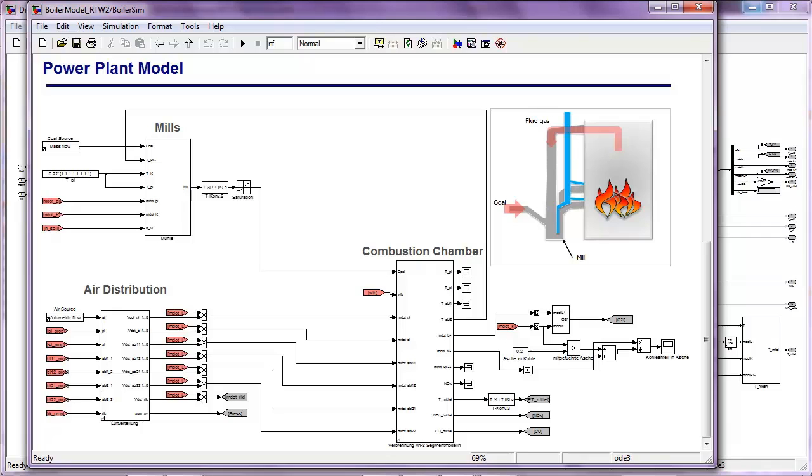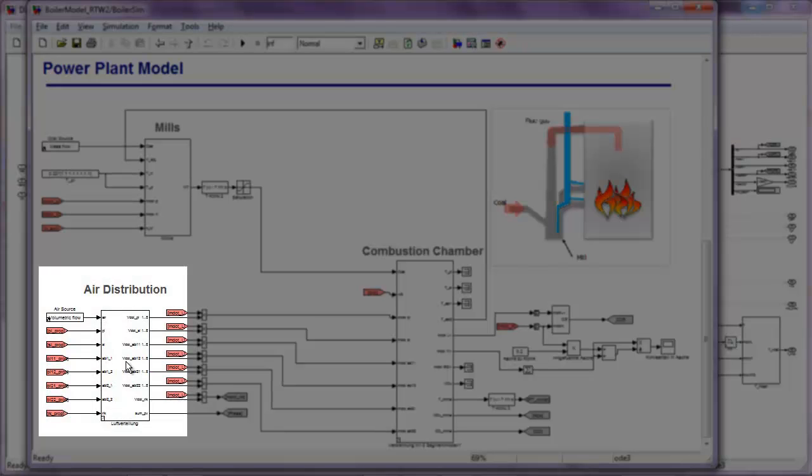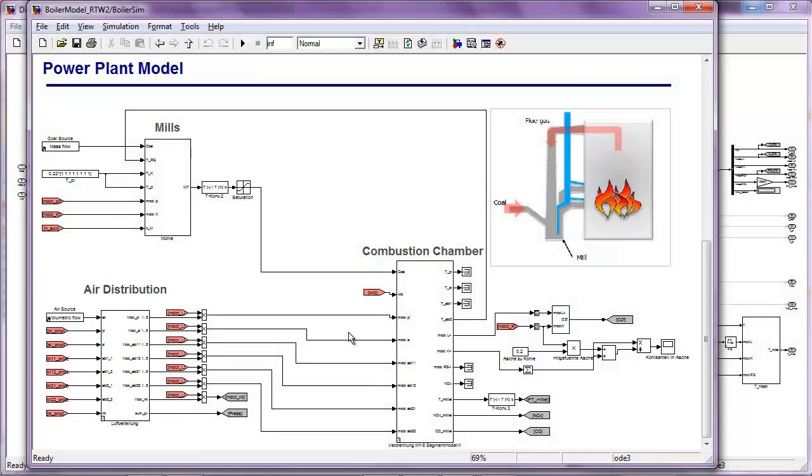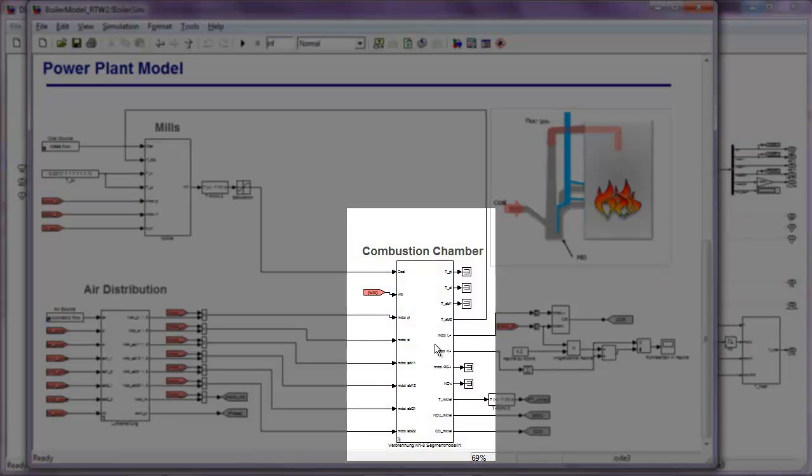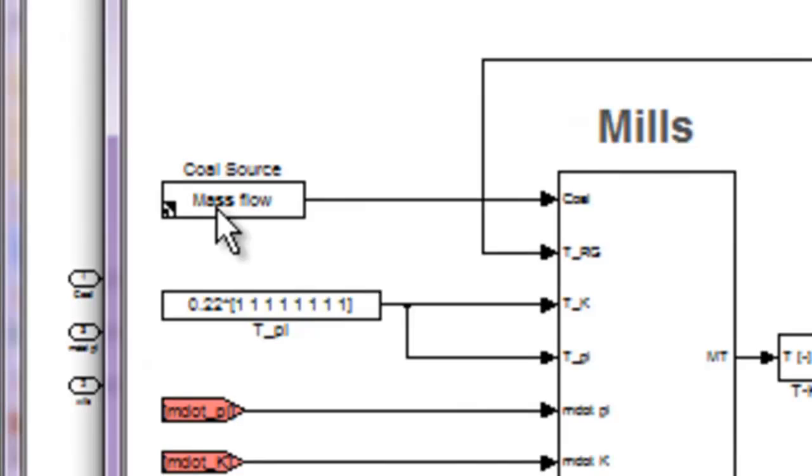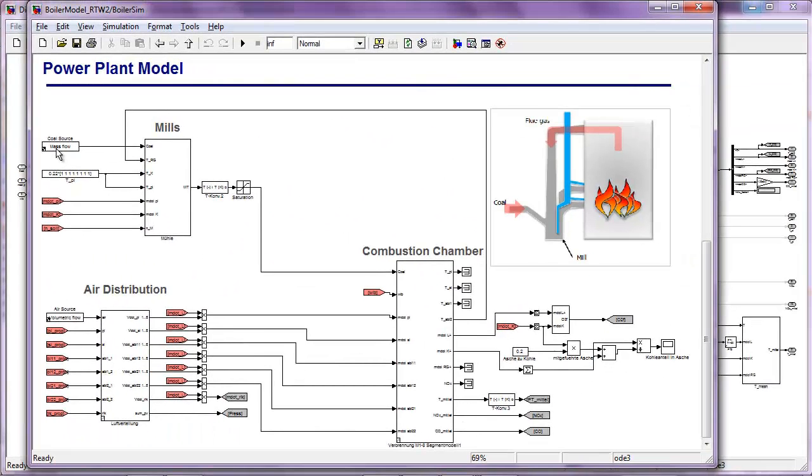Here you see the three main sections of the combustion cycle: the mills, the air distribution amongst the dampers, and the combustion chamber. The mills receive coal from a source block. Inside the mill, this coal is dried from excess moisture by using the flue gas flowing back from the combustion chamber.